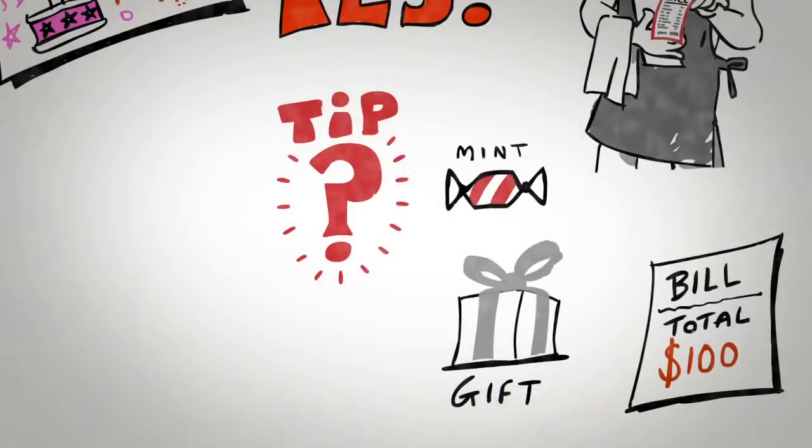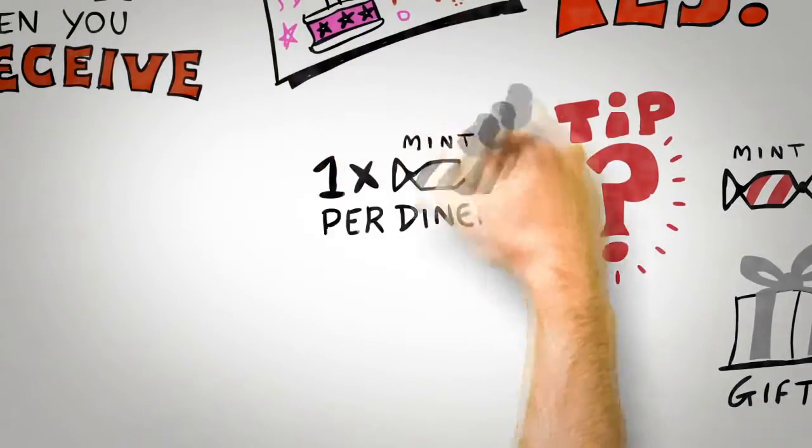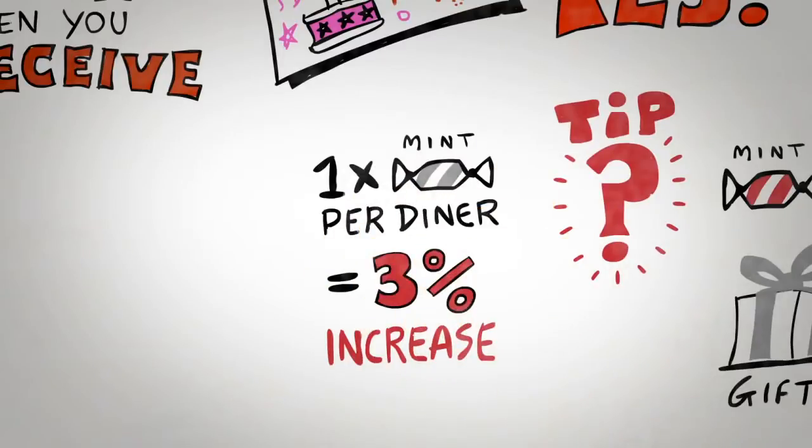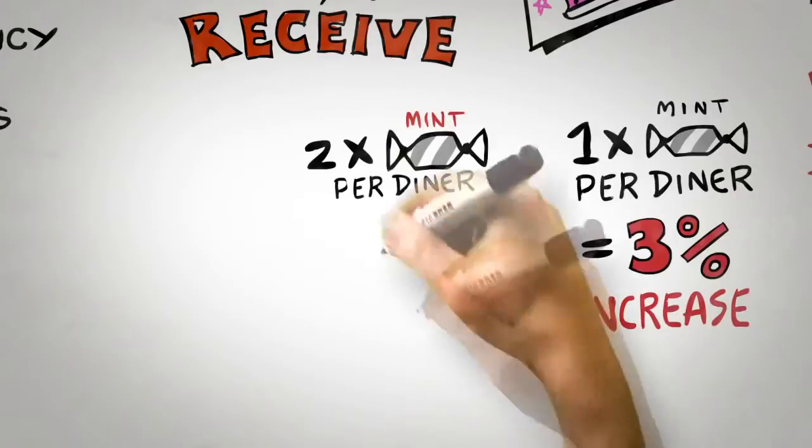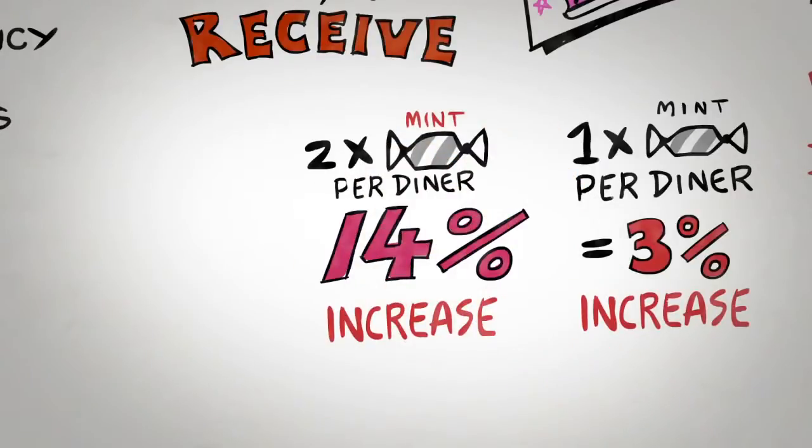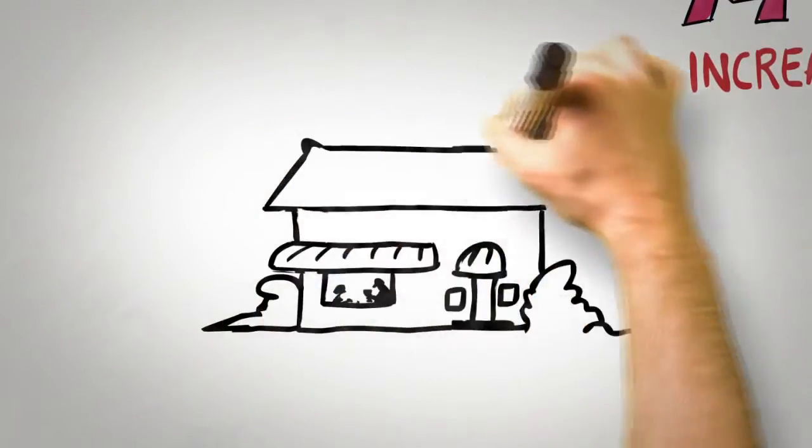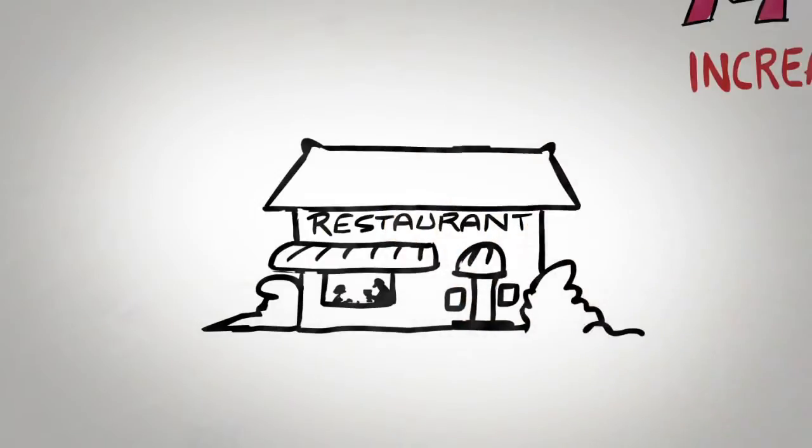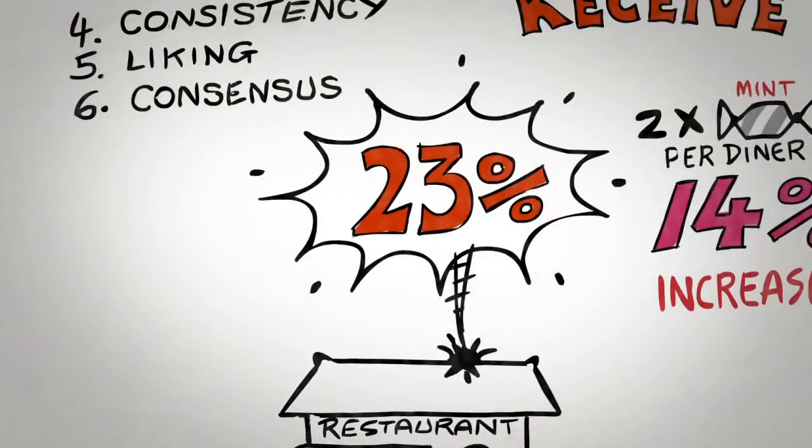Most people will say no, but that mint can make a surprising difference. In the study, giving diners a single mint at the end of their meal typically increased tips by around 3%. Interestingly, if the gift is doubled and two mints are provided, tips don't double, they quadruple, a 14% increase in tips. But perhaps most interestingly of all, if the waiter provides one mint, starts to walk away from the table, but pauses, turns back, and says 'for you nice people, here's an extra mint,' tips go through the roof. A 23% increase, influenced not by what was given, but how it was given.